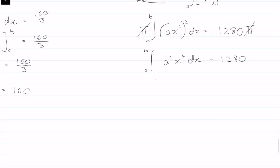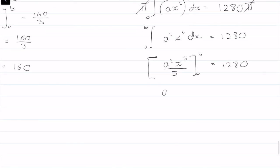Now we just need to integrate. a squared is a constant, so I'll leave it as a squared, giving us a squared times x to the 5 over 5, evaluated from 0 to b, equal to 1,280. Substituting in, we get a squared b to the power of 5 over 5, and when you substitute 0 everything goes away. So multiplying both sides by 5, a squared b to the 5 is equal to 1,280 times 5, which is 6,400. This is going to be our equation 2.